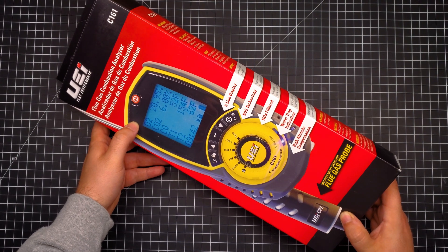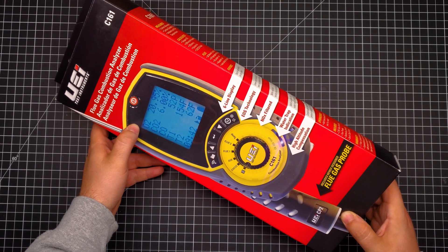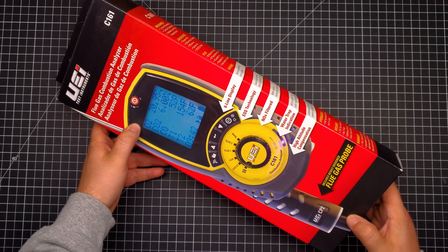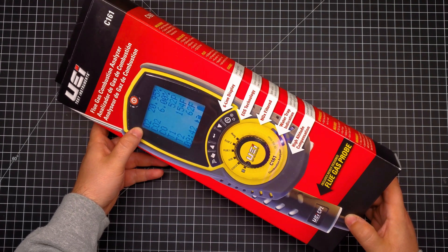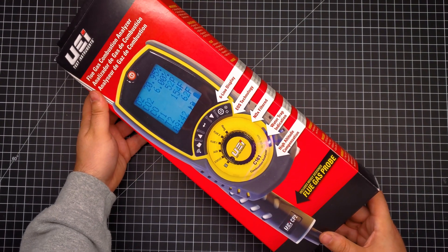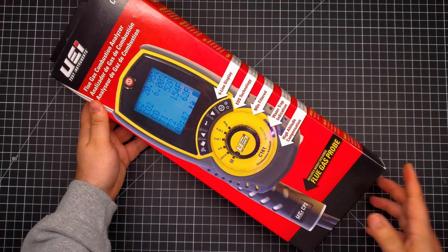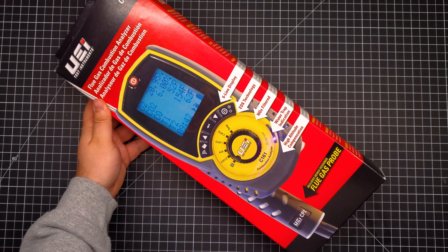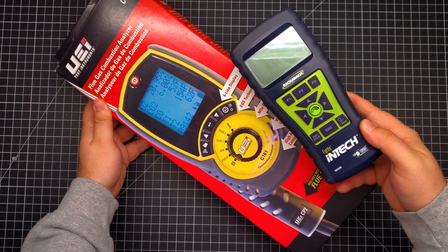So instead of relying on a CO and an O2 sensor, it uses a CO2 and a CO sensor and then calculates the balanced oxygen through there, as opposed to calculating it with an O2 and CO sensor like generic standard combustion analyzers.